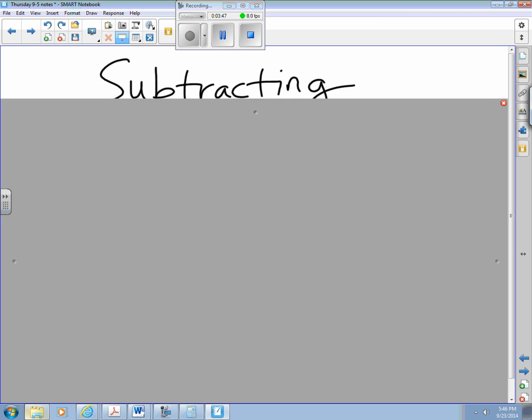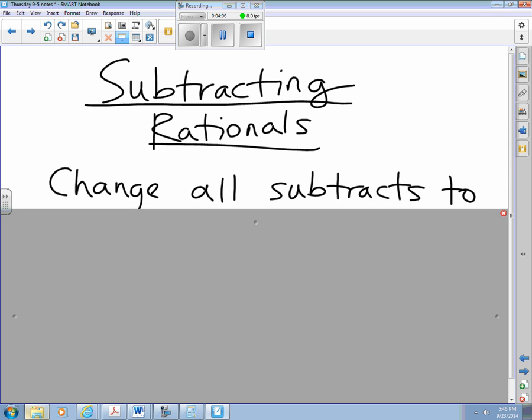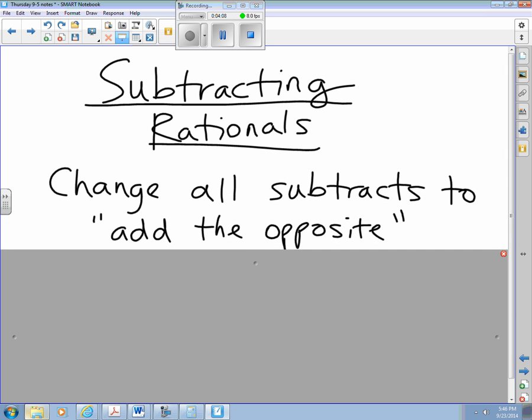There's the first example. From there, we'll start a new little topic in your notes, and that topic is Subtracting Rationals. I'll give you a second to catch up to me and write that down. So Subtracting Rationals is the title, and the first example we're going to do for this: we're going to remember a rule, and you learned this rule way back when you first learned integers in grade seven. Change all subtracts to add the opposite.